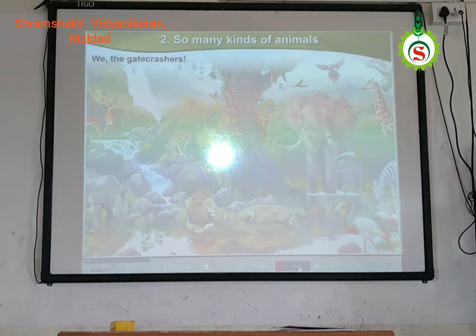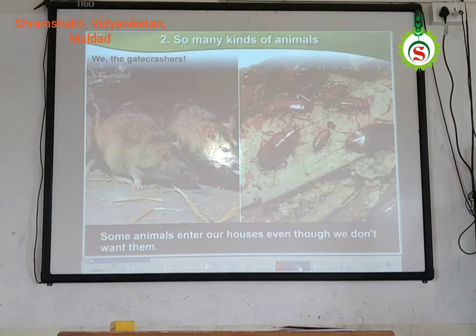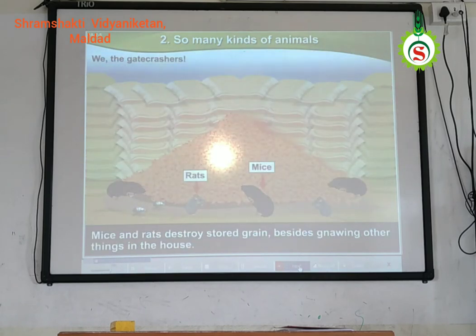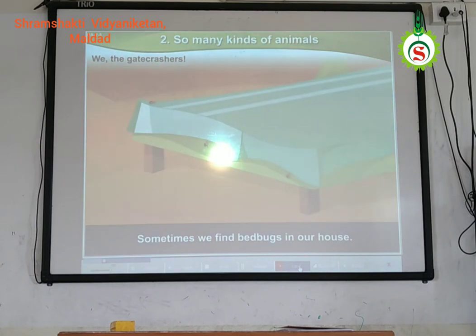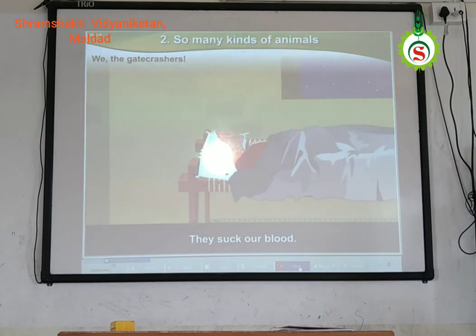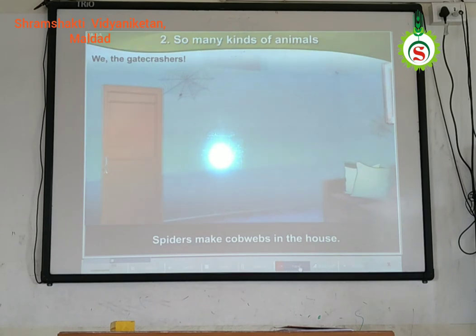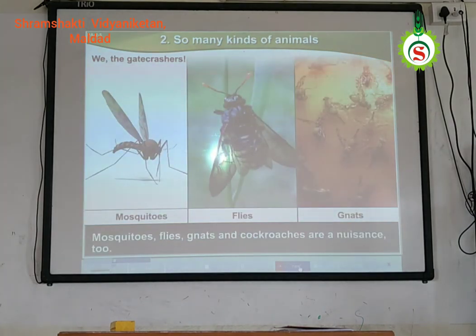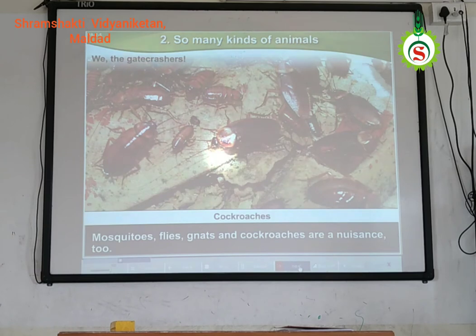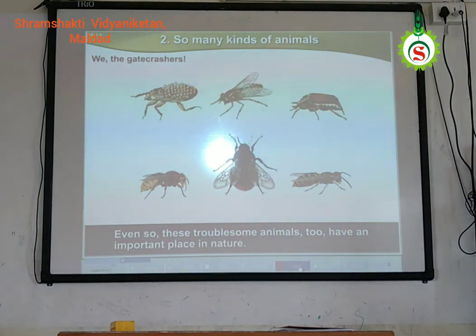We can be nuisances. Some animals enter our houses even when we don't call them. Mice and rats destroy stored grains and gnaw at other things in the house. Sometimes we find lizards in the house. Spiders make webs in the house. Mosquitoes, lice, gnats, and cockroaches are a nuisance too. Even so, these small animals do have an important place in nature.